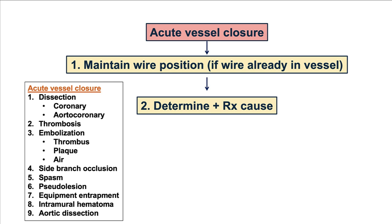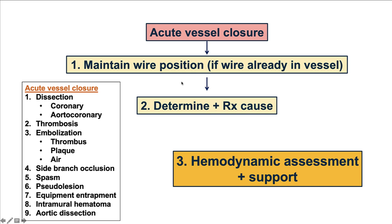For example, for dissections the treatment is to place a stent, but if there is embolization, placing a stent is actually contraindicated because it is going to worsen the distal embolization. Therefore, having a differential diagnosis is critical for targeting the treatment and getting the best possible results. And finally, when acute vessel closure occurs, depending on the location of vessel occlusion, hemodynamic instability can ensue, and in some cases hemodynamic support may be needed.